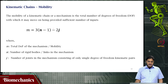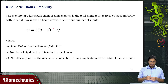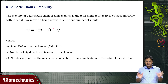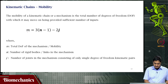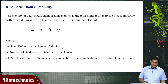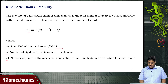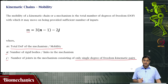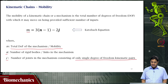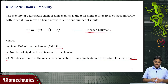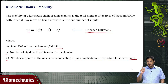When discussing kinematic chains, one important concept is mobility — the total number of degrees of freedom with which the system may move when sufficient inputs are given. There is a formula for this: M is the total degrees of freedom of the mechanism, also called mobility. N is the number of rigid body links in the mechanism, and J is the number of joints with only single degree-of-freedom kinematic pairs. This equation describes the relationship between mobility, number of links, and number of single-DOF joints, and is called Kutzbach's equation.